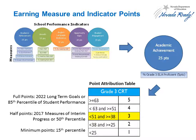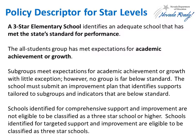Point attribution tables are available on the accountability data portal at www.nevadareportcard.com. A school's performance, as measured by their index score, is then mapped to the policy descriptors that were developed for each of the five star levels. Developed by stakeholders, each policy descriptor includes consequences and support associated with each level, and they are linked to NDE's goals and policy priorities.